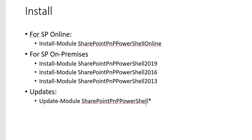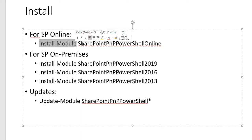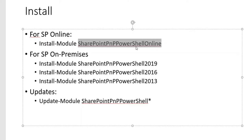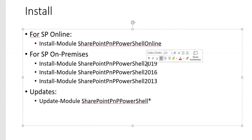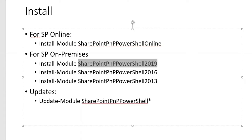Before we can create a page using PNP, it is important to have installed the SharePoint PNP PowerShell online module if you are working with SharePoint Online. If you are working on-premise, depending on which version of SharePoint on-prem you are using, you have to install the adequate library. It's recommended to update the installed version maybe once a month.